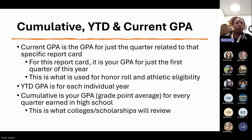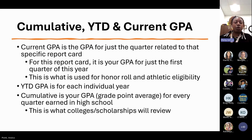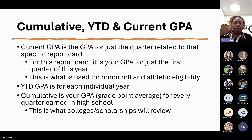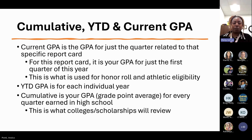Hello, everyone. So your current GPA — your grade point average — is just for the quarter related to the specific report card. Right now your current GPA is reflective of quarter one, which is the quarter we just completed. This is what is used for honor roll and athletic eligibility. Your year-to-date GPA is for each individual year — all four quarters combined into one. And then your cumulative GPA is for every quarter earned in high school. This is what colleges and scholarships will review as the cumulative GPA.